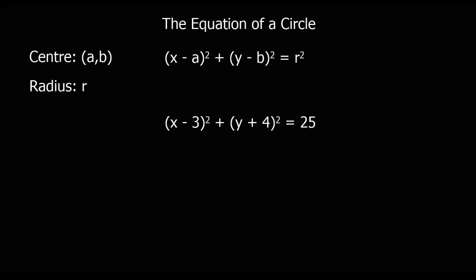This video is about the equation of a circle. The equation of a circle is in this form: x minus a squared plus y minus b squared equals r squared, where the centre is (a, b) and the radius is r.